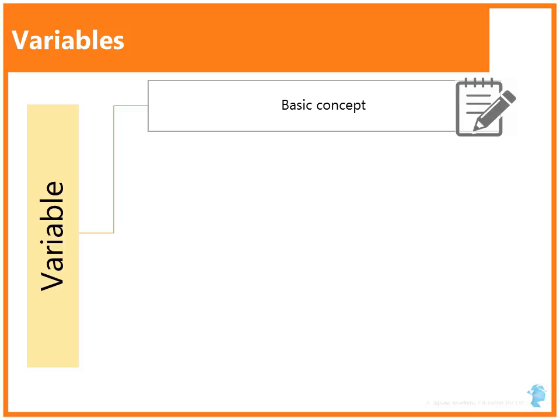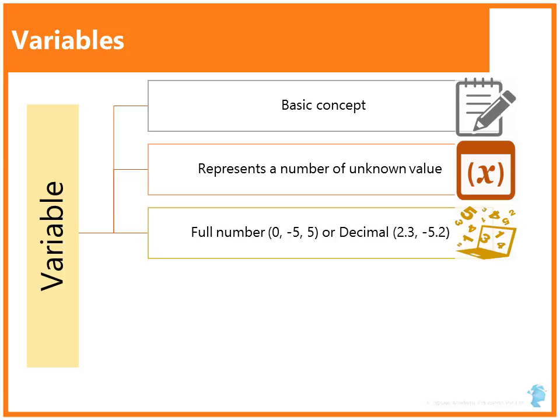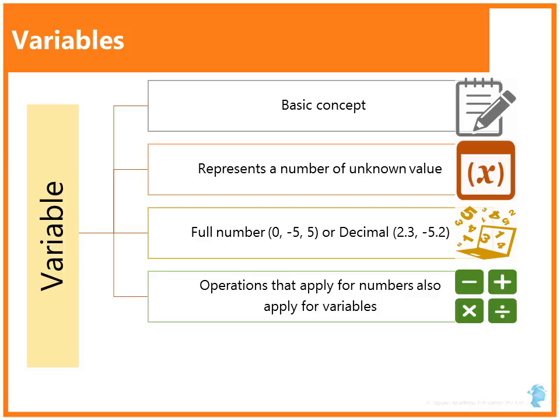Variables. Variable is a basic concept that is taught in high school mathematics and a variable simply represents a number of unknown value. A variable can be full number like 0, minus 5, 5 or it can be a decimal like 2.3, minus 5.2, etc. Operations that apply for numbers like addition, subtraction, multiplication also apply for the variables.